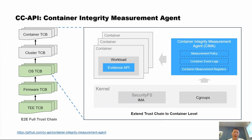I will continue to introduce the container-integrated measurement and share a use case of a confidential AIGC loader. To establish an end-to-end full trust chain, the root of trust begins with the launch of a trusted execution environment comprising the trusted compute base of the TEE. The process initiates with firmware components such as virtual BIOS, OVMF, GRUB, or SHIM as a bootloader, which measures the firmware TCB. Subsequently, the OS kernel, initrd, and other components are measured as OS-TCB. CCAPI defines the cluster TCB and container TCB to extend the measurement to the container level. You can find the container measurement spec in the CCAPI community.